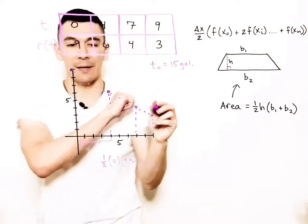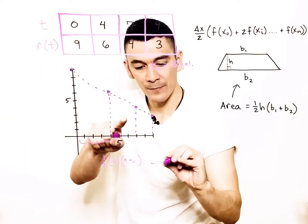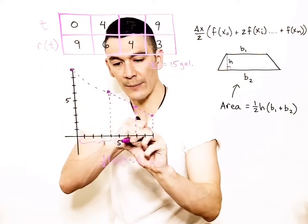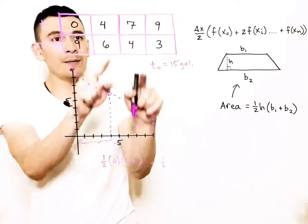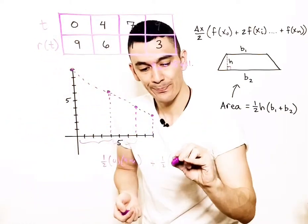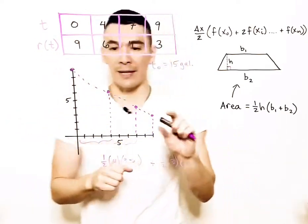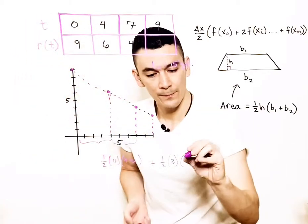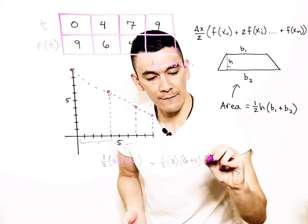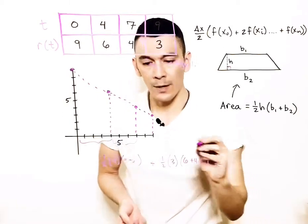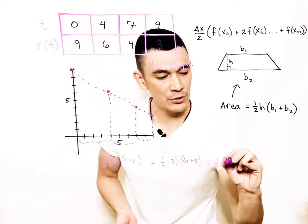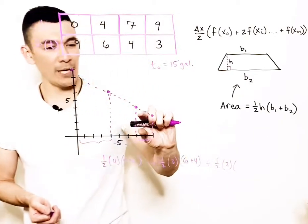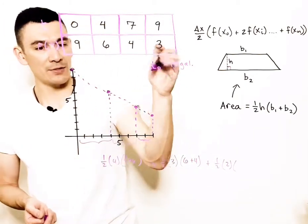Plus, let's set up the other trap. So one-half, and what's the height of this trapezoid? That's three units, because it's from 4 to 7, times the sum of the bases, 6 plus 4. And then we have the last trapezoid, one-half, this height is 2. The sum of the bases would be 4 plus 3.